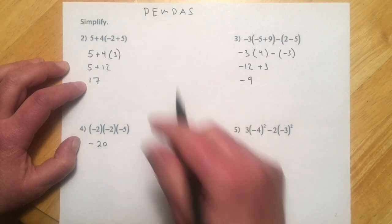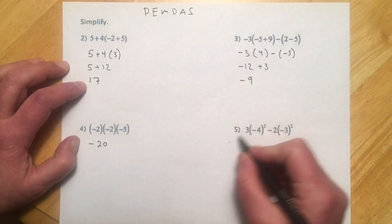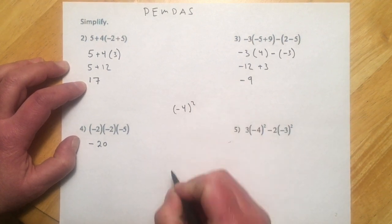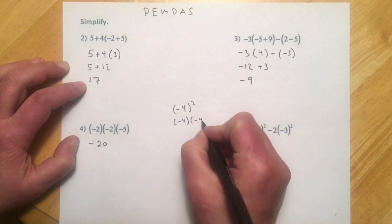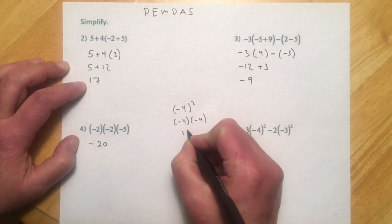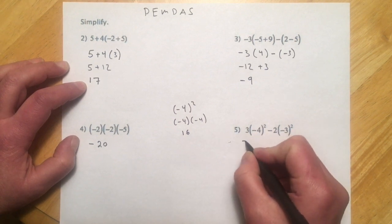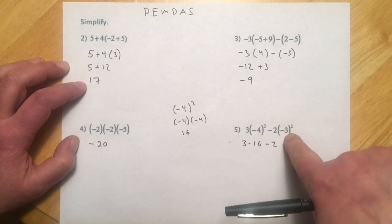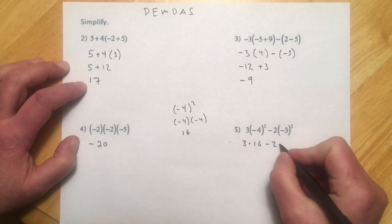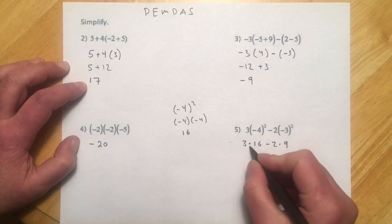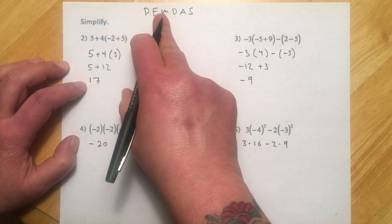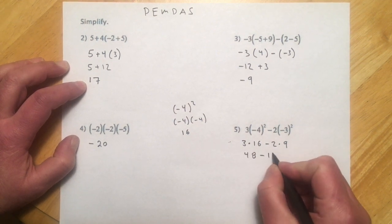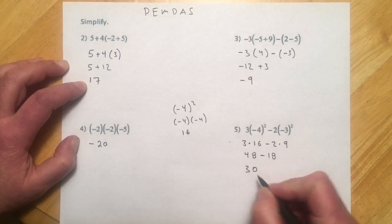And this example, we get some exponents here, and this is a little bit tricky. So this, let me do this off to the side. Negative 4 quantity squared, so that means negative 4 times negative 4. So see how there's two negative signs? So that's going to be a positive 16 when we evaluate it. So this will be 3 times 16 minus 2. This is going to be negative 3 times negative 3, so that'll be a positive 9. And now I can do my multiply, because I did my exponent, so we're at multiply. 3 times 16 is 48, minus 2 times 9 is 18, and so that should be 30.